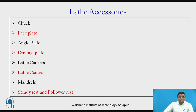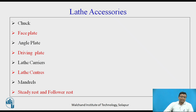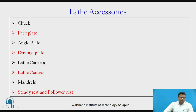Lathe accessories means — suppose you want to hold the job directly by supporting between the centers, most of the time it is not possible. We can support the job between the centers, but there are different lathe accessories like a chuck, face plate, angle plate, driving plate, and lathe carriers. For different operations, we have to use different lathe accessories. The main lathe accessories are: the chuck — with its different types — face plate and angle plate, driving plate and lathe carriers (also called lathe dogs), different types of centers, mandrels, and steady rest and follower rest.